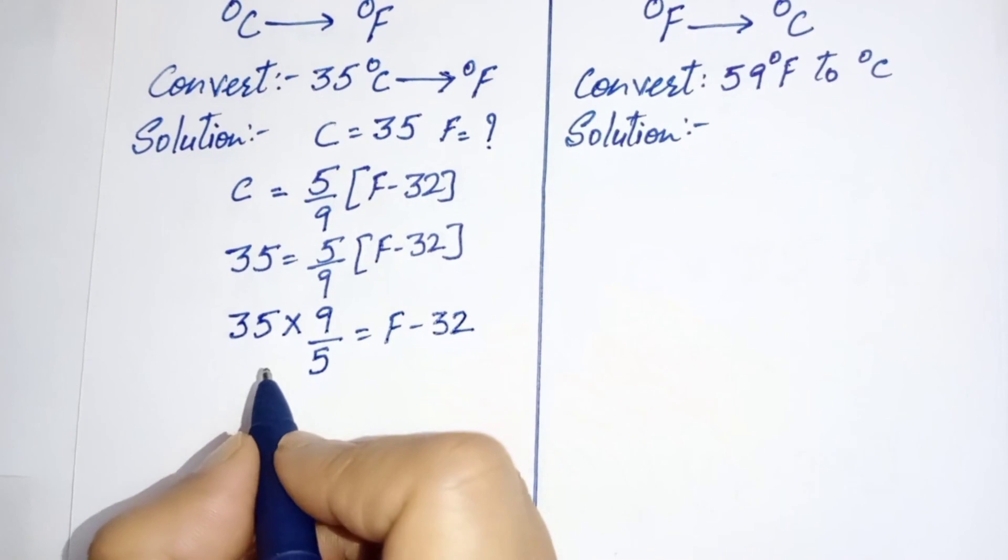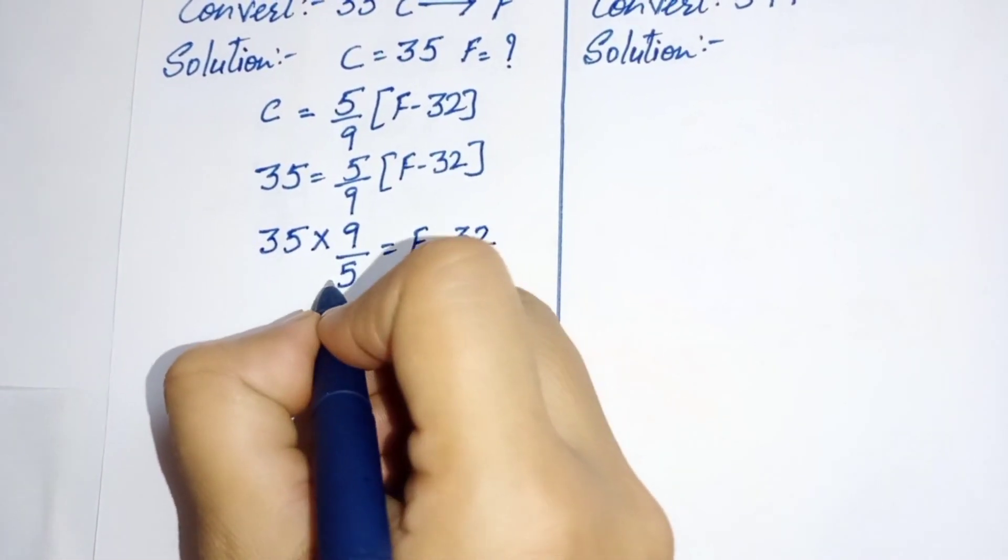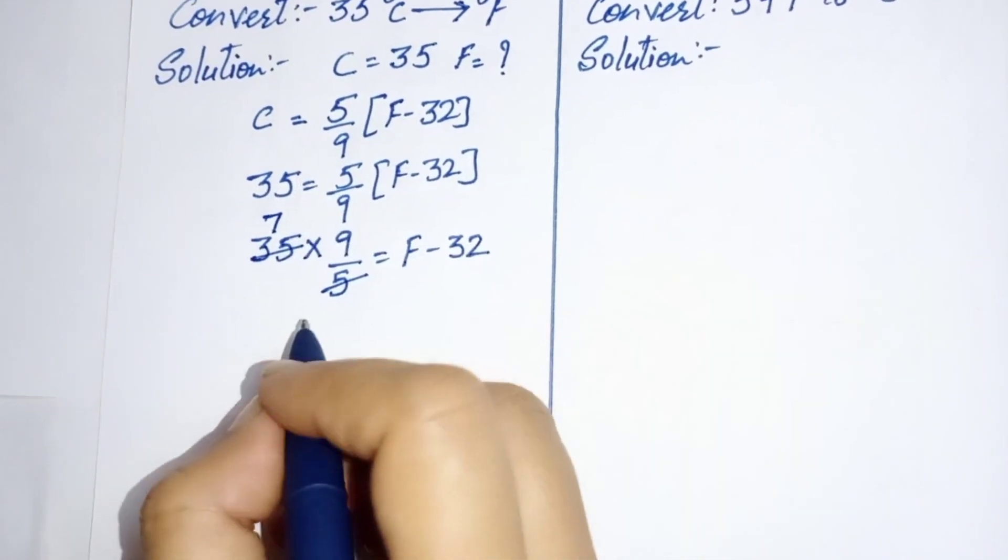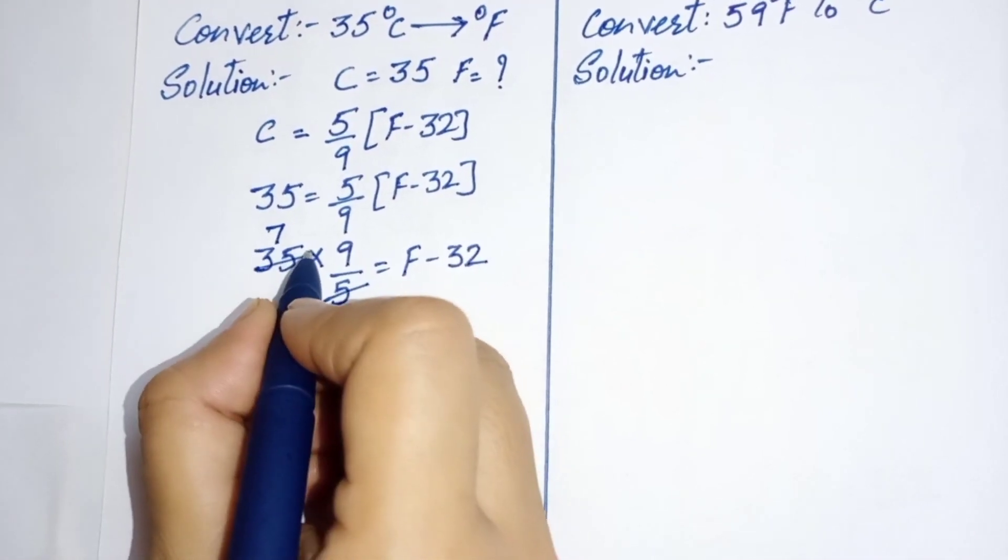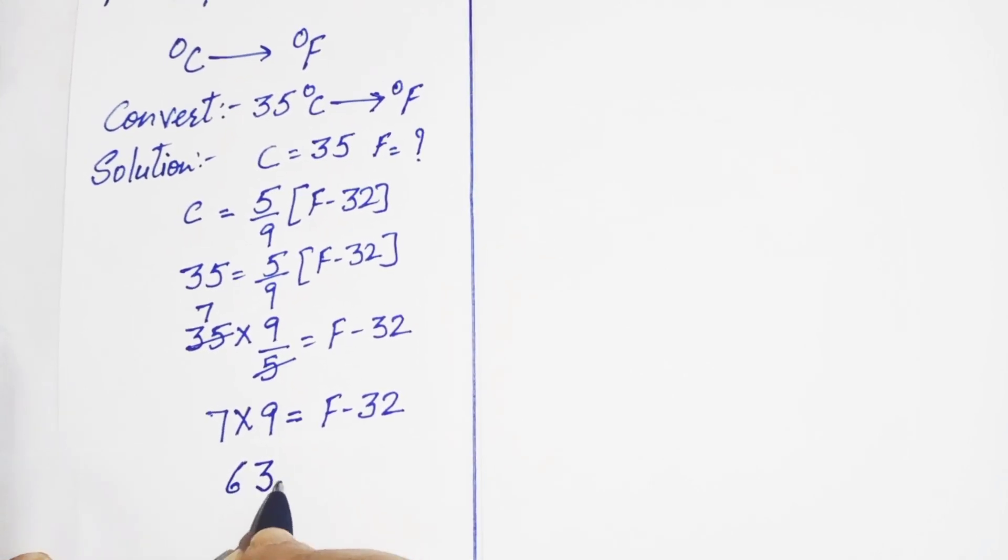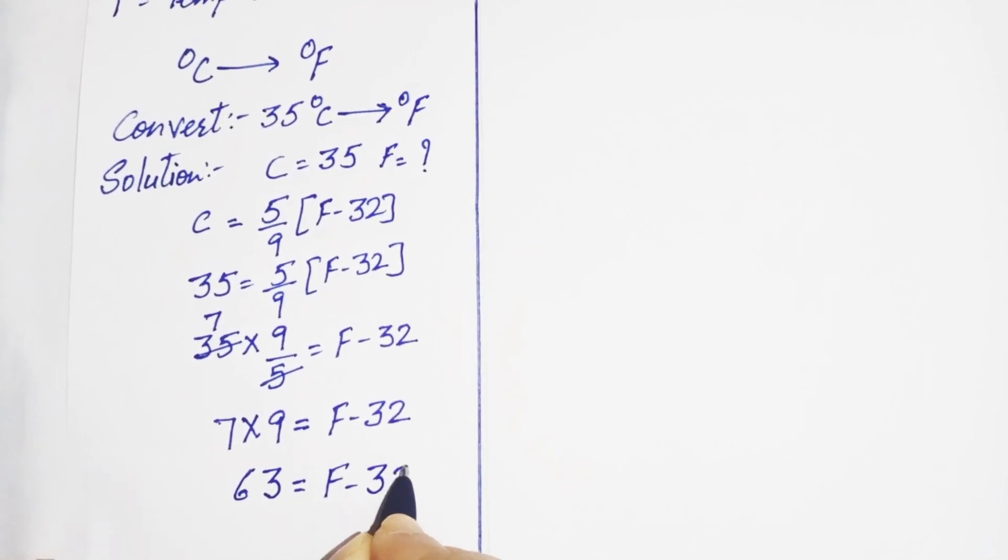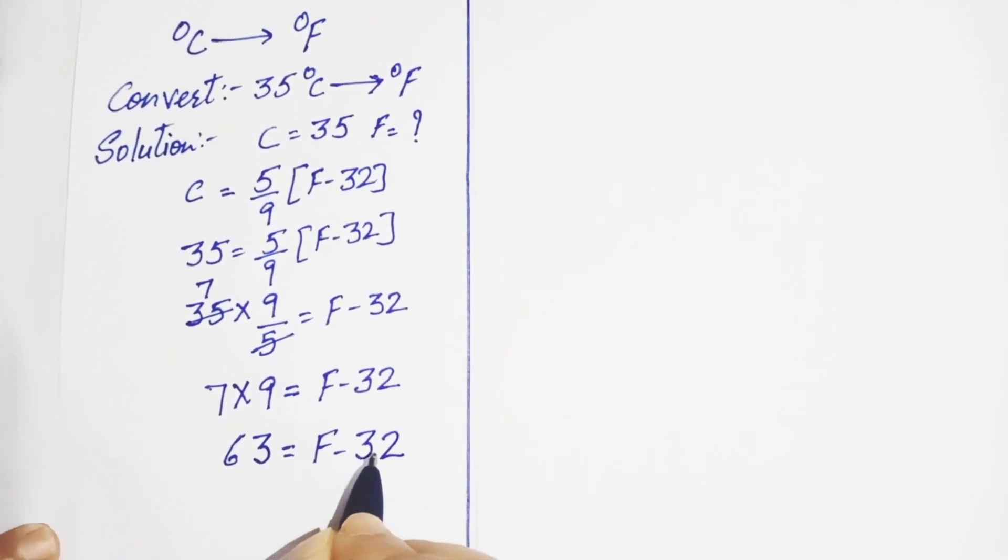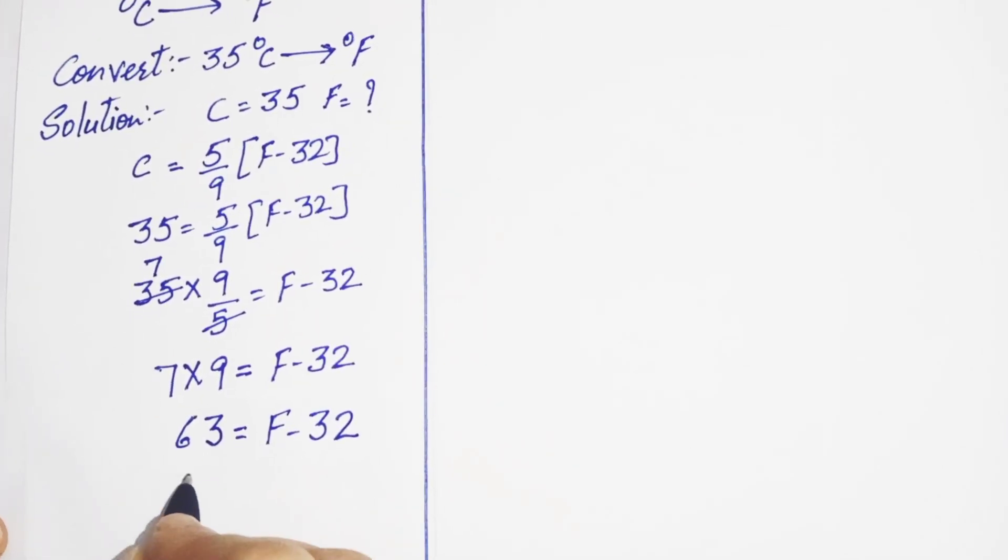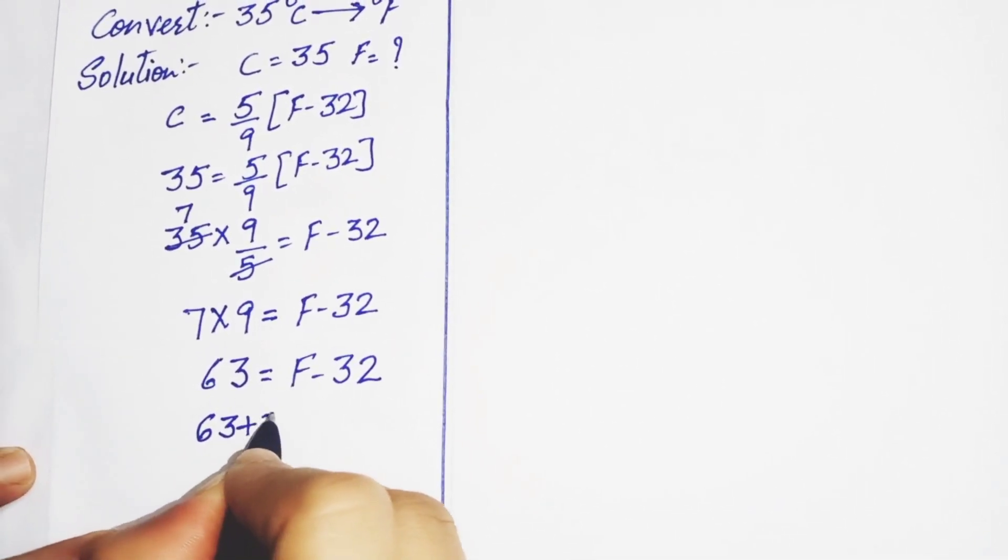Now dividing 35 by 5, we get 5 sevens of 35. Now multiplying 7 by 9 we get 63 is equal to F minus 32. Now taking 32 to other side and add 63 to it.